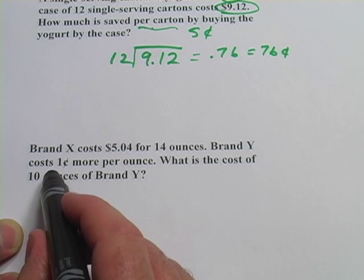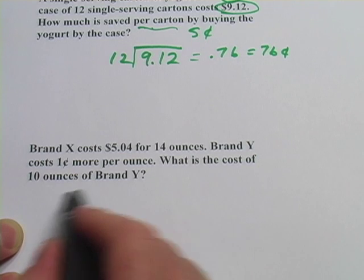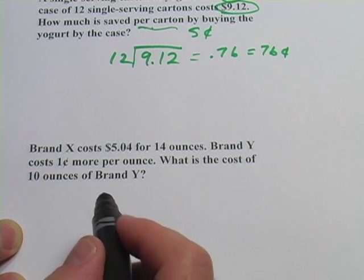And then we'll raise that by 1 cent to get the cost of brand Y per ounce. And once we do that, then we can figure out what 10 ounces cost. So there's really three parts of this problem.